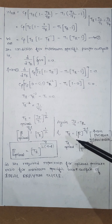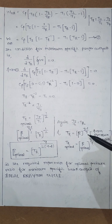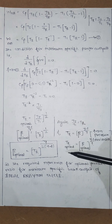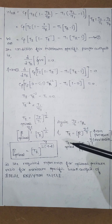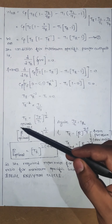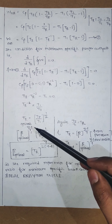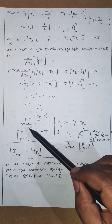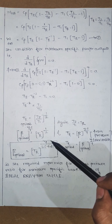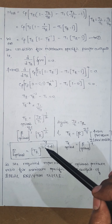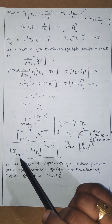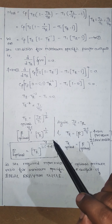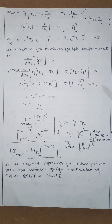From the previous derivation, TR = beta^(gamma/(gamma-1)). If TR is optimal, beta is also optimal: TR_optimal = beta_optimal^(gamma/(gamma-1)). Substituting TR_optimal = (T3/T1)^(1/2) and transferring the exponent (gamma-1)/gamma to the other side gives the final expression: beta_optimal = (T3/T1)^(gamma / (2*(gamma-1))), which is the required expression for the maximum specific work output of an ideal Brayton cycle.